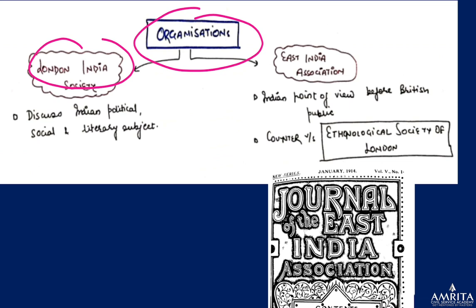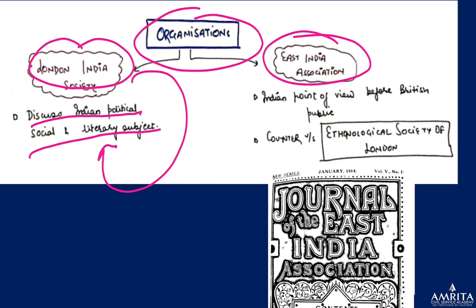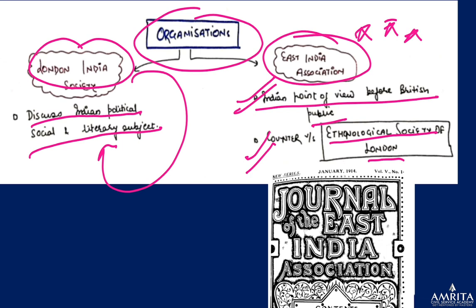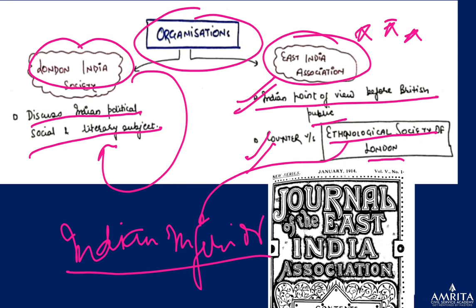Regarding his organizations: the London India Society was established to discuss Indian political, social, and literary subjects. The East India Association was to present the Indian point of view before the British public — to present India's case in print in front of the British public. It was set up to counter the Ethnological Society of London, which was presenting Indians as inferior as part of the colonial civilizational agenda.